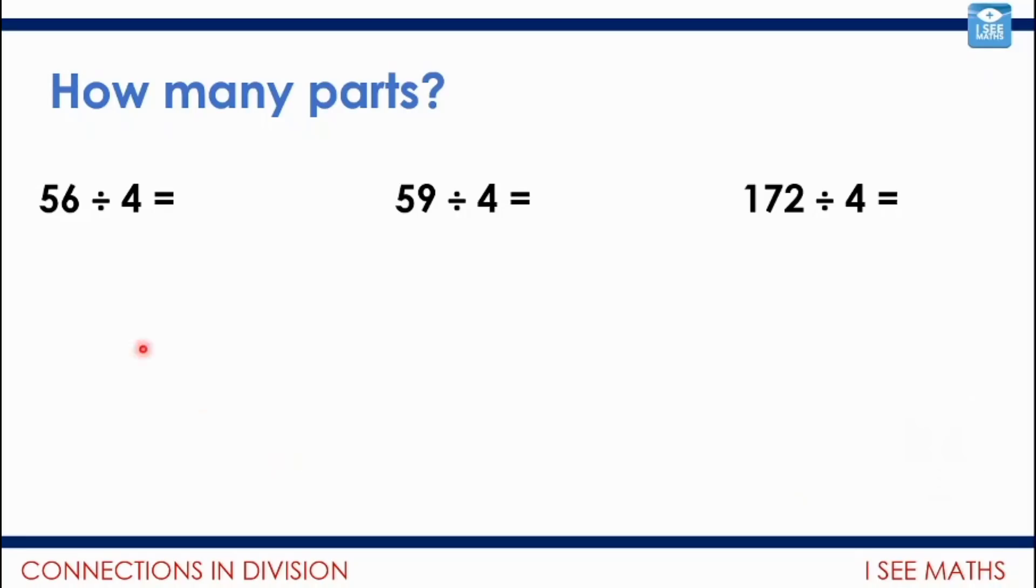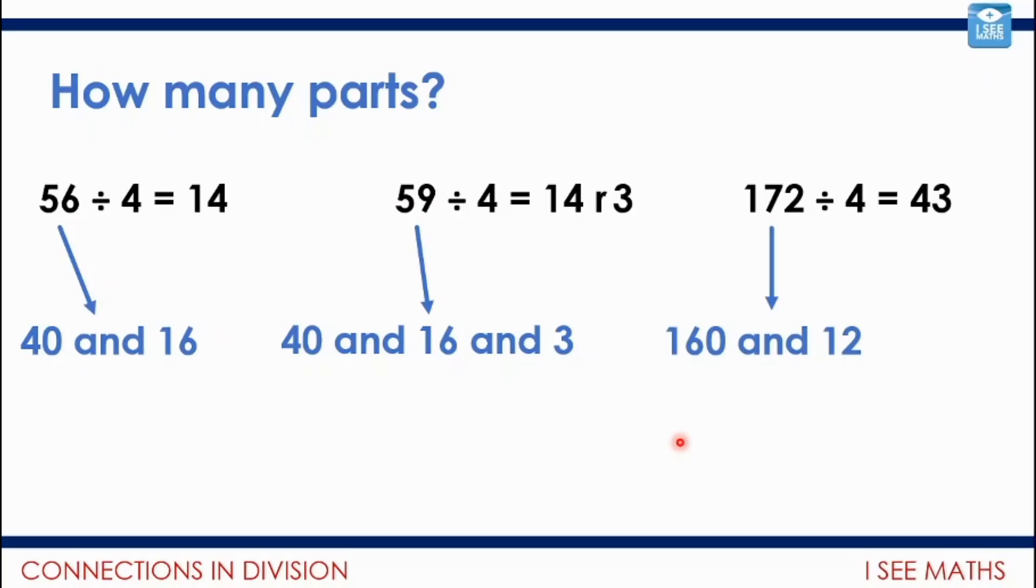So let's have a look. How many parts? 56 divided by 4. I would generally split the 56. There's other ways this can be done, but I'd generally split the 56 into 40 and 16. If you're using a bus stop method, that's essentially what happens there. What about 59 divided by 4? Well, of course, it's very similar to this question. What's the difference? I'll have a piece of 40, that's a multiple of 4. A 16, a multiple of 4. And there'll be this 3 left over. So it's quite a relatively small number. I actually have 3 parts here. About 172 divided by 4. Well, I'll split the 172 into 160, 40 lots of 4, and then that 12 as well.